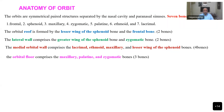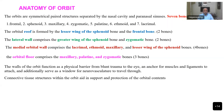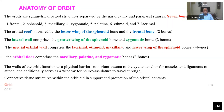So you can remember that totally there are seven bones contributing to the formation. The walls of the orbit function as a physical barrier protecting the eyes from getting injured, and anchor for muscles and ligaments to attach. They also serve as a window for neurovascular structures to travel through. The connective tissue structures within the orbit aid in support and protection of the orbital contents.